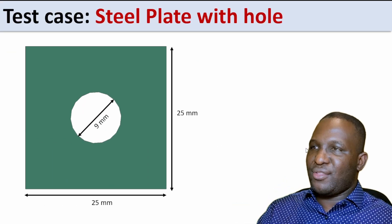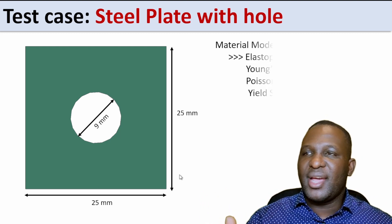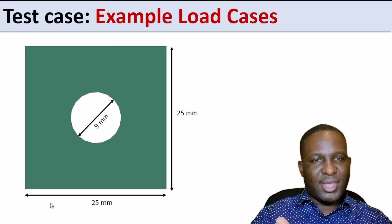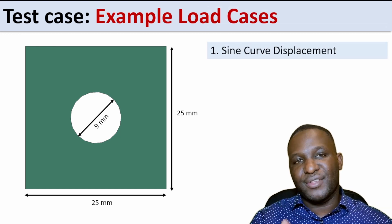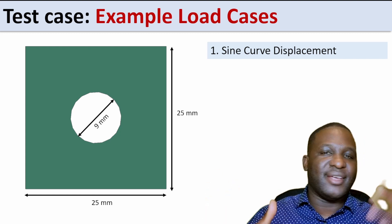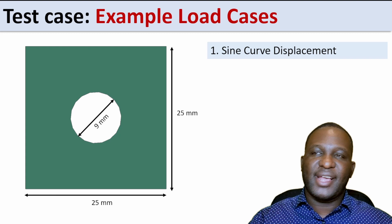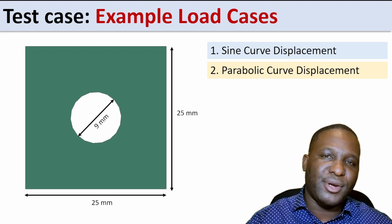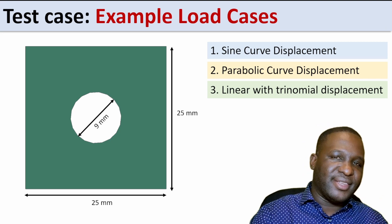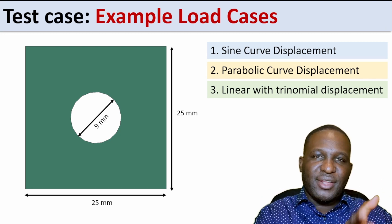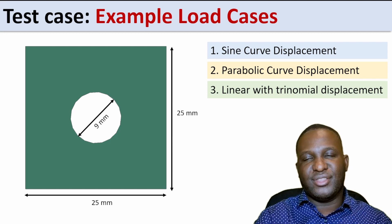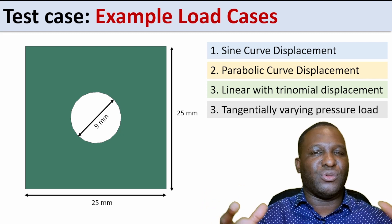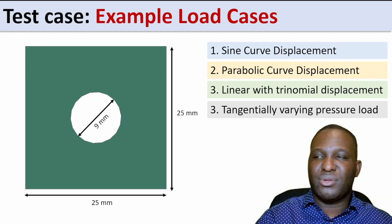We're going to be using a 25 by 25 millimeter steel plate with a hole in the middle. The material property will be an elastic-plastic material. The load cases we're considering are: a sine curve displacement (for example, seismic variant loading on a structure); a parabolic loading (for distributed loads varying parabolically); a trinomial varying displacement combined with a linear varying displacement; and finally a tangentially varying pressure load applied to the internal hole.